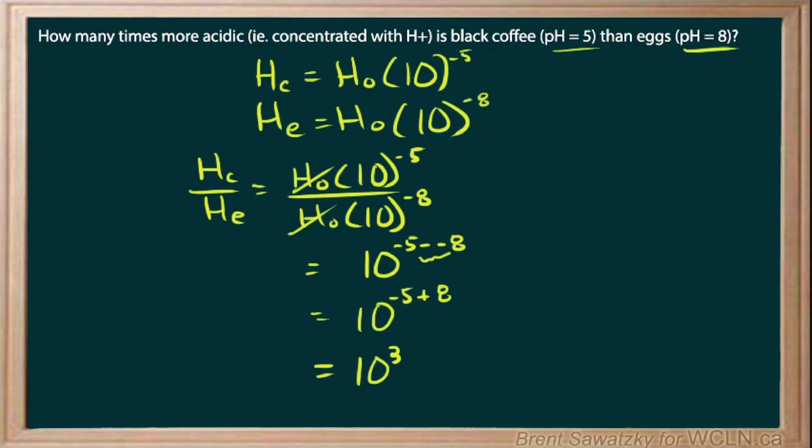We know that 10 to the three, or 10 times 10 times 10, is just a thousand. So how many times more acidic is coffee than eggs? Well, it's a thousand times more acidic. And there's the answer.